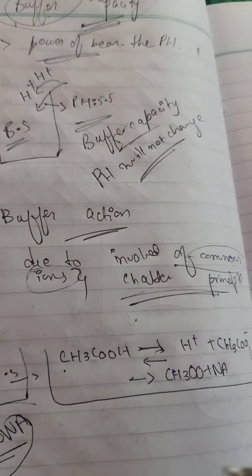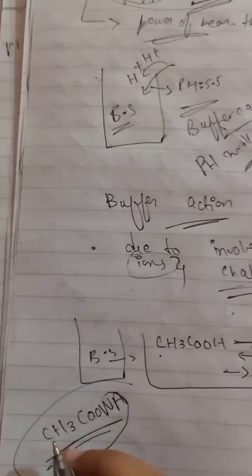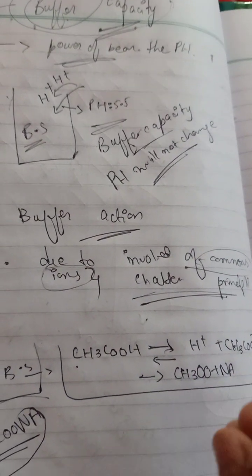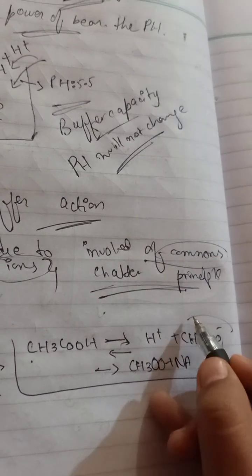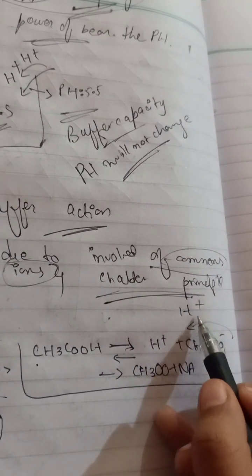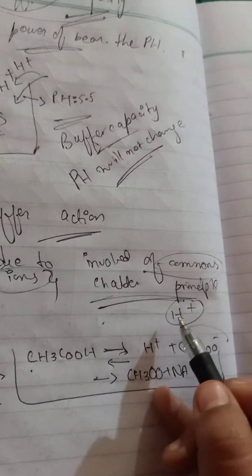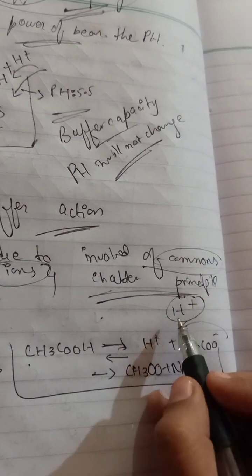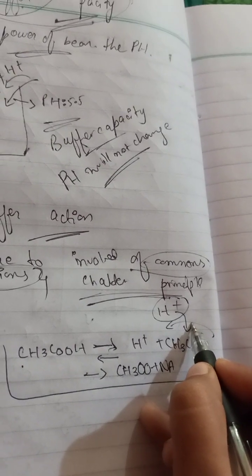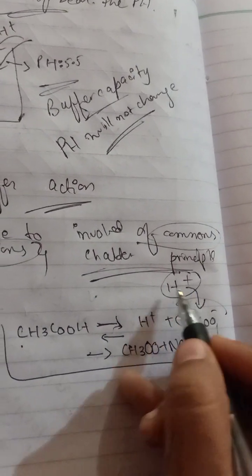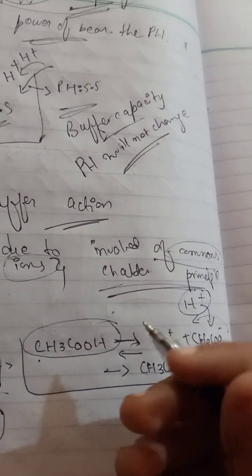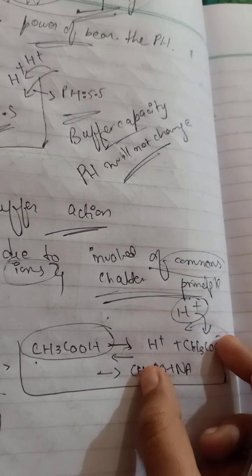The acetic acid is less ionized because it is a weak electrolyte, while sodium acetate is a strong electrolyte that is fully ionized. For example, if I add hydrogen ions (H⁺) into this buffer solution, the H⁺ will react with the acetate ion CH₃COO⁻, and the reaction will move backward, forming unionized CH₃COOH again.